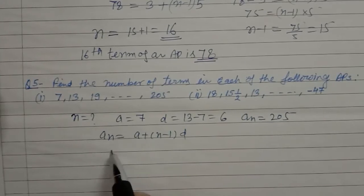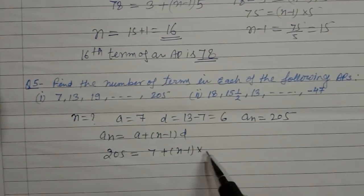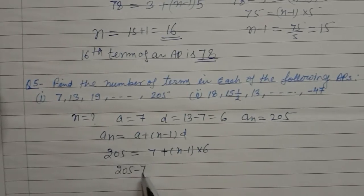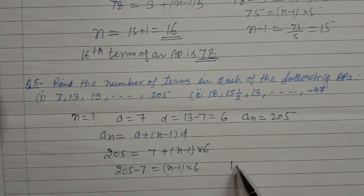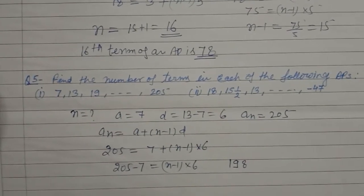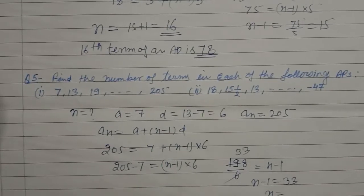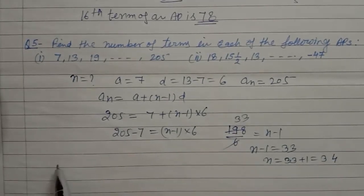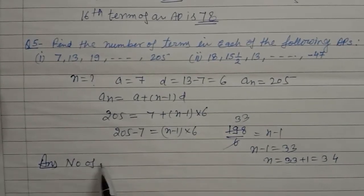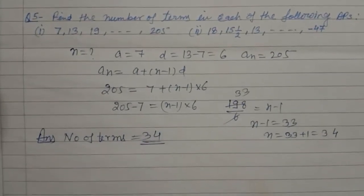205 is equal to 7 plus n minus 1 into d۔ d کی value 6 آئے گی۔ تو 205 minus 7 equal to n minus 1 into 6۔ 198 upon 6 is equal to n minus 1۔ Cancel کر دیجئے تو 33 آجائے گا۔ n minus 1 is equal to 33, so n is equal to 33 plus 1 is equal to 34۔ تو number of terms equal to 34، یہ ہمارا answer ہو جائے گا۔